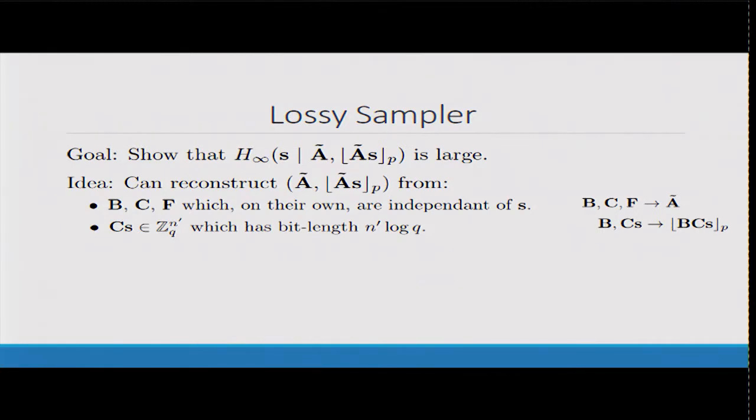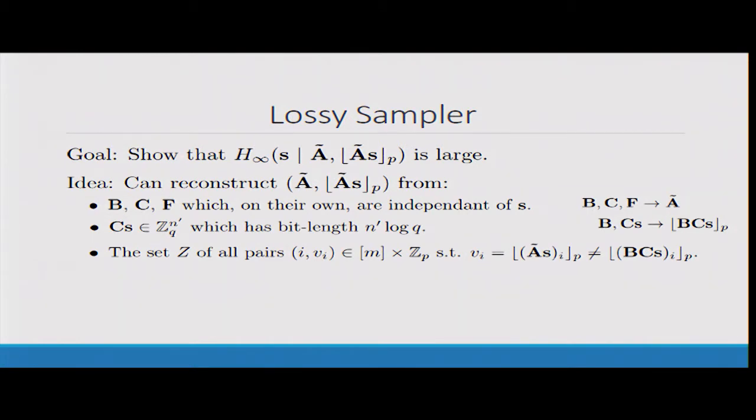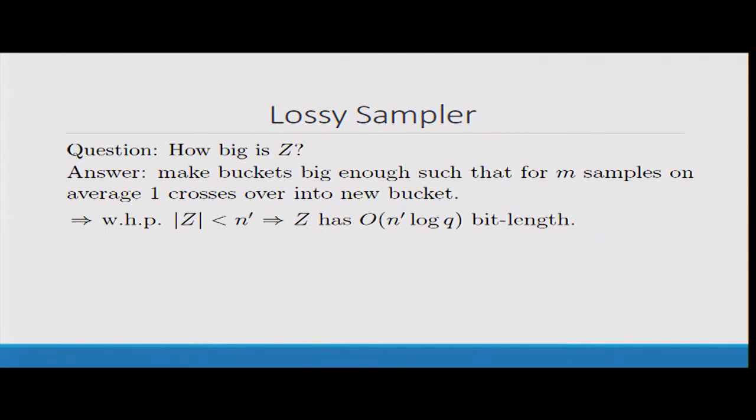But that's not exactly what you have here; you've got A tilde s rounded. What's the difference between BCs rounded and A tilde s rounded? At certain components in that vector, you might have ended up in an overflow zone, and then when you add the Fs part, you'll actually go into the next bucket, which means that the rounding will actually result in a different value. So the last thing we'll tell you is exactly those components: the positions in this vector BCs where there was an overflow and the new value of the rounding.